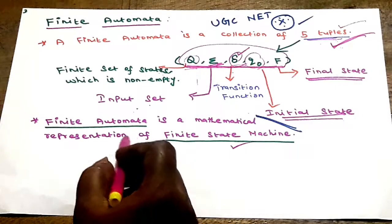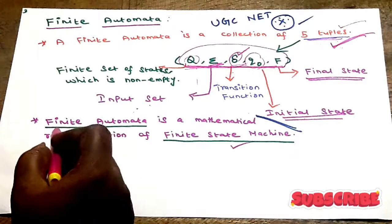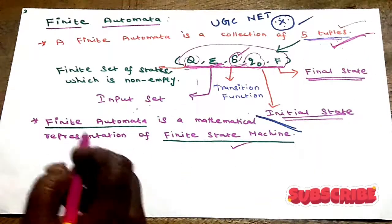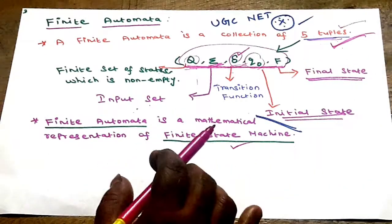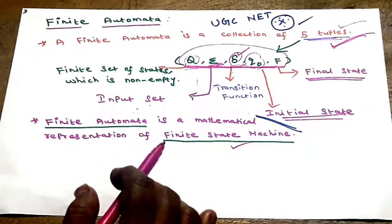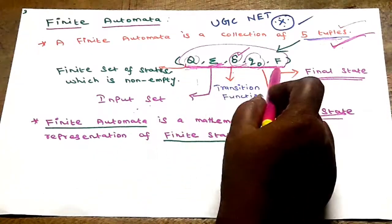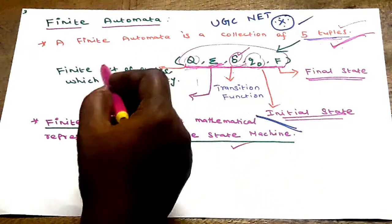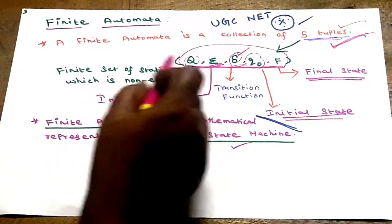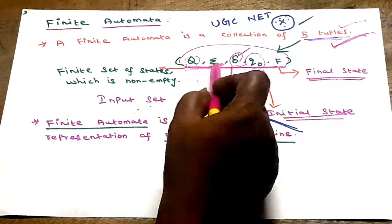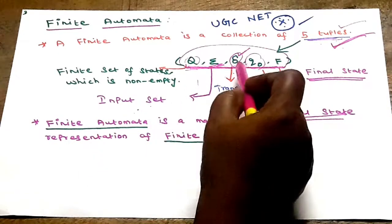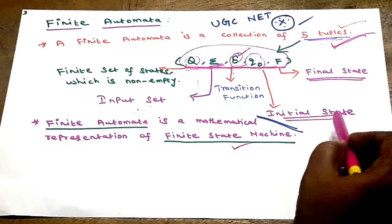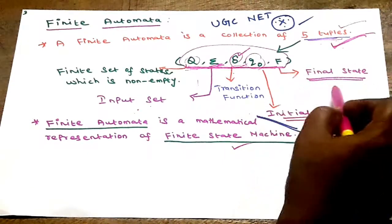Next topic: finite automata, also called finite state machine. Finite automata is a collection of five tuples, that is five elements. The five symbols are: Q meaning states, the input set, the transition function, Q-naught meaning initial state, and F meaning final state.